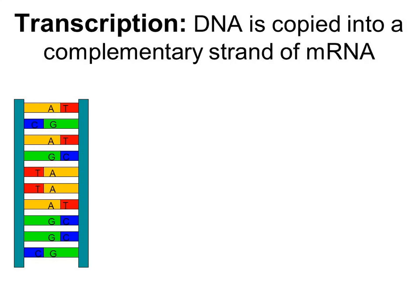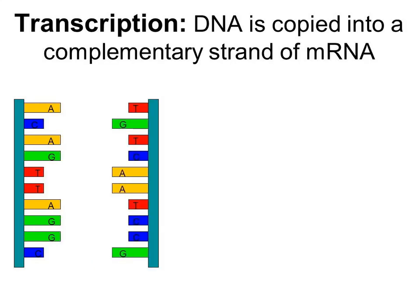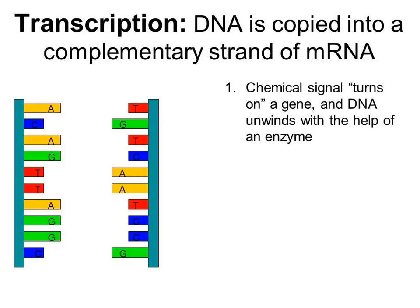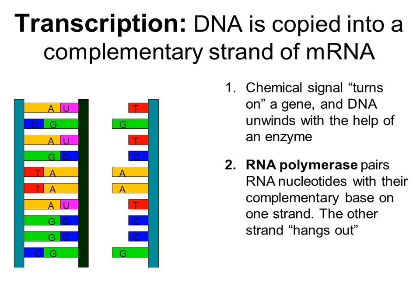This is basically how transcription works. There is a set of molecular signals that bind to a region called the promoter region. Transcription factors, which are proteins, come and bind to that promoter region, essentially turning on the gene. That attracts an RNA polymerase to come and unwind that segment of DNA so that it can pair up RNA nucleotides with one of those strands. These RNA nucleotides are built in a five prime to three prime direction, with new nucleotides being added to the three prime end.